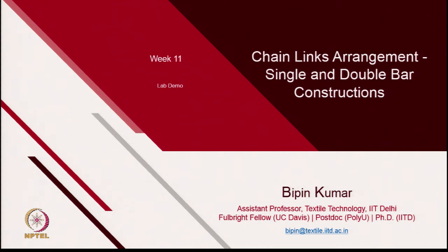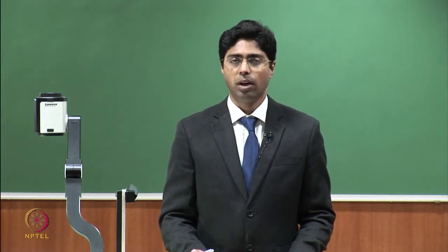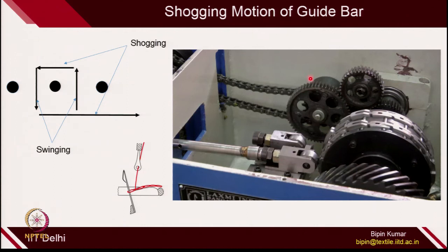In the last class, I already mentioned the importance of chain links and pattern drum. Your lapping plan of warp knit structure is actually derived from how you are placing the links of different height on a pattern drum. Today I am going to give you the real practical of how you can arrange the links. Just a quick recap: in the last class, I talked about the shogging motion with the help of pattern drum and chain links.